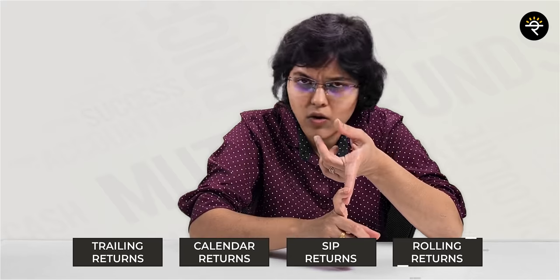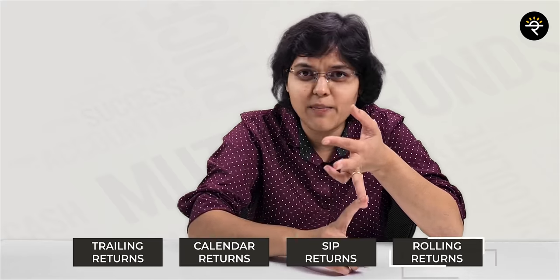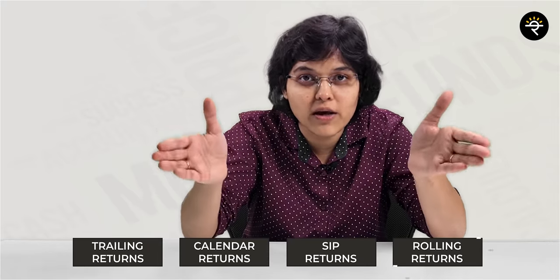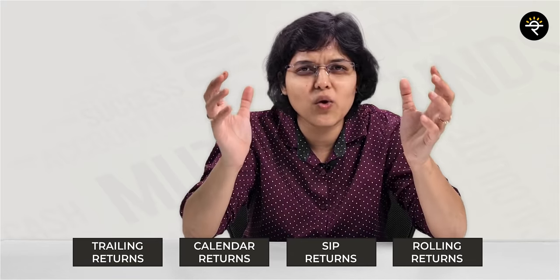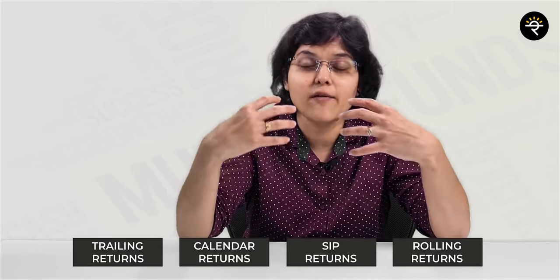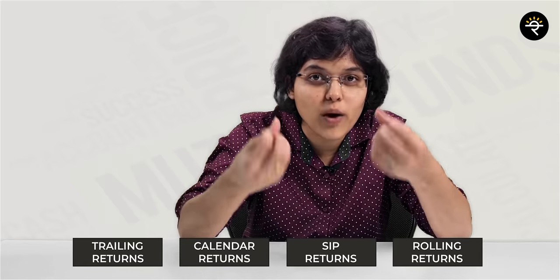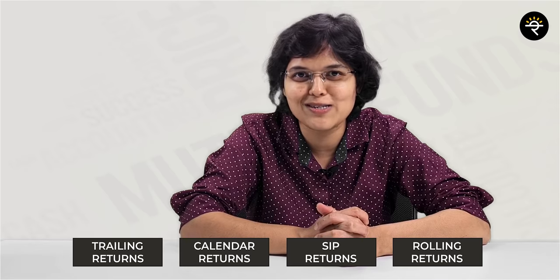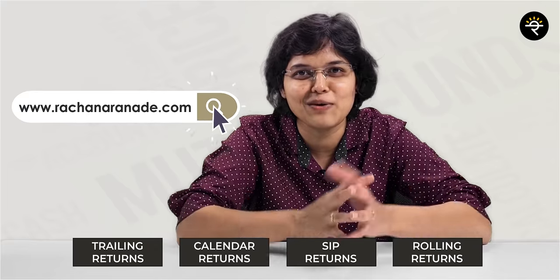So whenever you want to check the consistency of a mutual fund's performance, you do not check calendar return, trailing return, or SIP return — for consistency, you have to check rolling return. I have explained rolling return in detail and discussed how to use a specific website to check out rolling returns, but for that you will have to check out my course on mutual funds at rachnaranade.com.